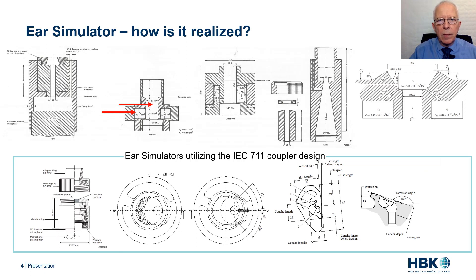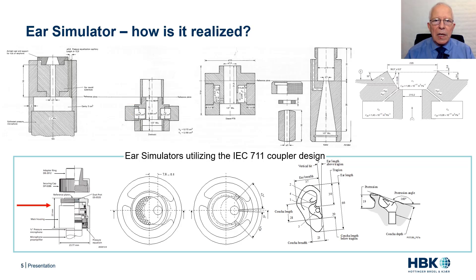Some of the first ear simulators intended for measurements of earphones were developed in the early 1960s. The Zwislocki coupler depicted in the slide is an example of one of these early ear simulators. In the Zwislocki coupler, the location of the cavities as well as the cylindrical shaped ear canal can be observed. In the early 1980s, the 711 coupler was established, and the actual design of the coupler was inspired by the Zwislocki coupler.